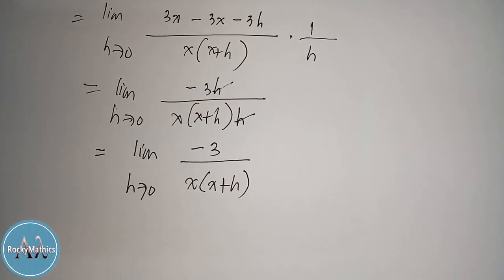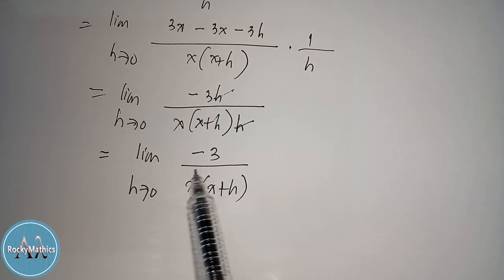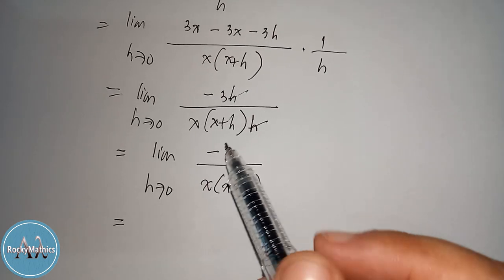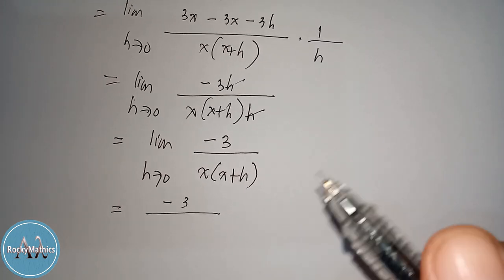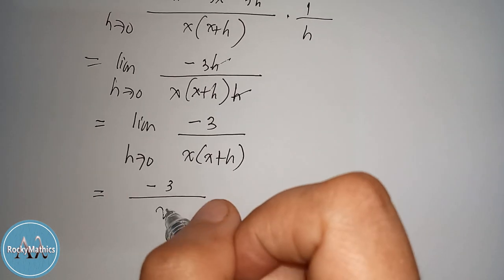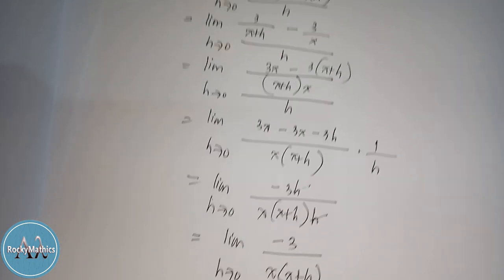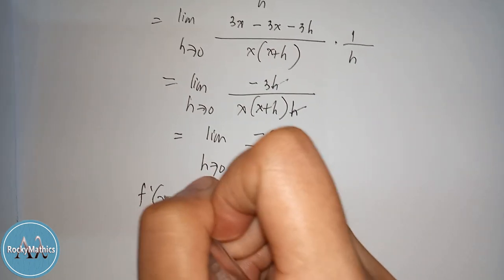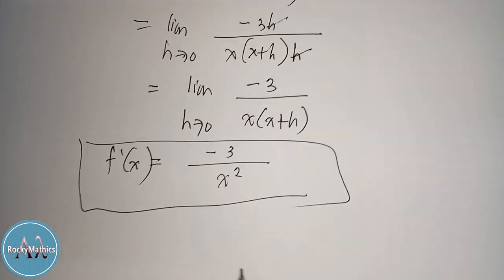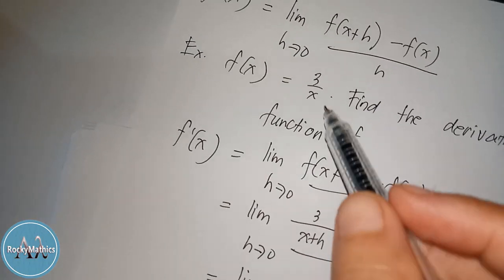So when we apply the concept of limit, all we have to do is get the limit of the numerator and the limit of the denominator. The limit of the constant is the constant, so this becomes negative 3. And the limit of x times x plus h as h approaches 0 becomes x squared. In other words, the derivative of the given function 3 over x is negative 3 over x squared.